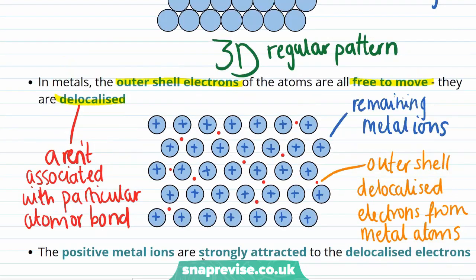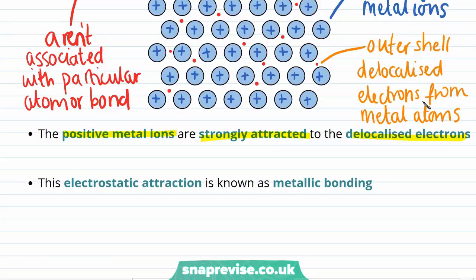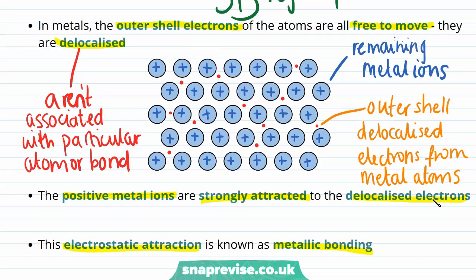There's still a really strong force of attraction between these positive metal ions and the delocalised electrons. And it's this electrostatic attraction between the positive and the negative, which is what is forming the metallic bond. Metallic bonds are the strong electrostatic forces of attraction between delocalised electrons and closely packed, positively charged metal ions.